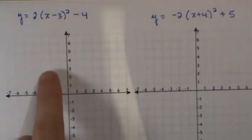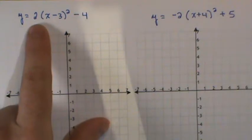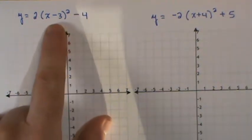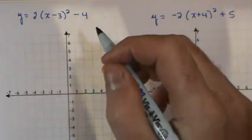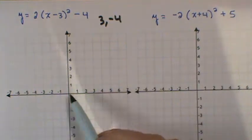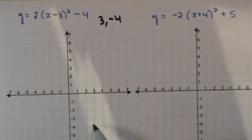So we start off with y equal 2 times the quantity x minus 3 squared minus 4. My vertex would be located at 3, negative 4. So I'm going to locate 3, negative 4.